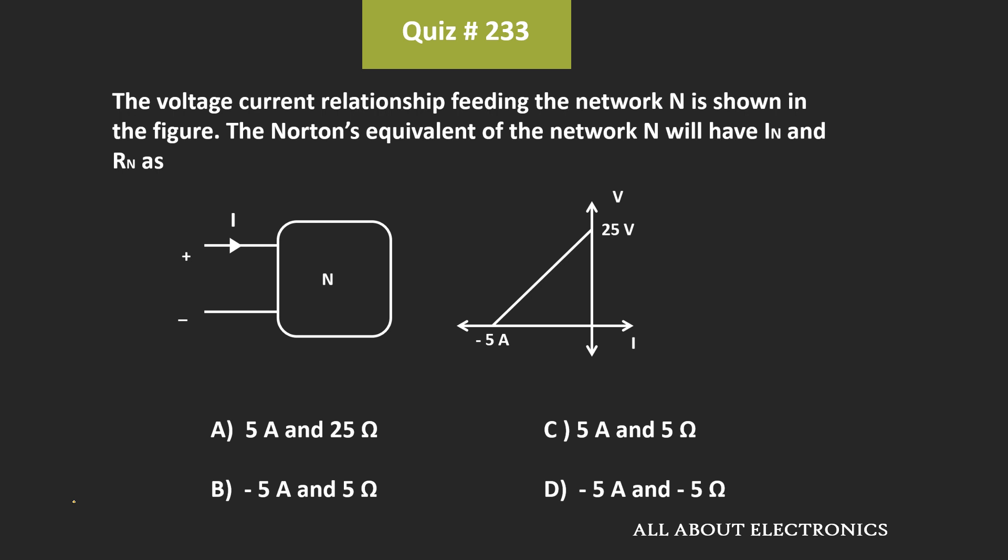Now, this is a very simple question provided if you understand the question properly. In this question, first of all we have been given the voltage-current relationship which is feeding the network N by the following graph. So basically, we have been given the voltage-current relationship for the source which is feeding this network.